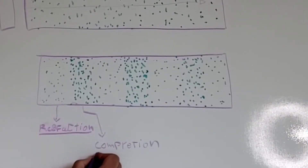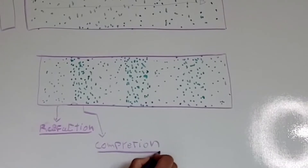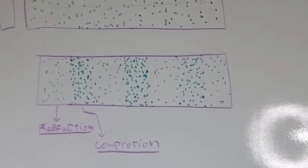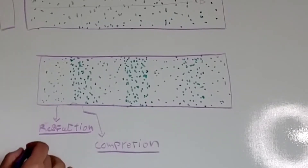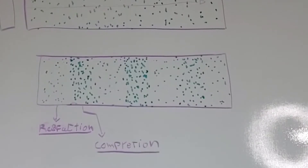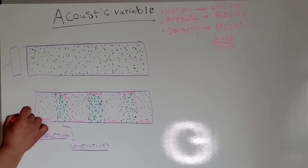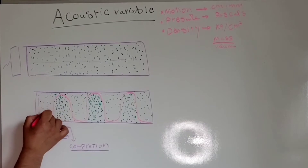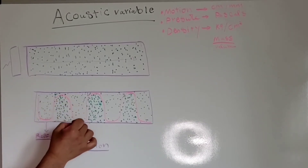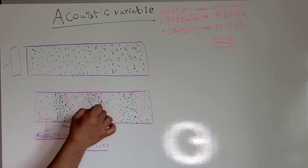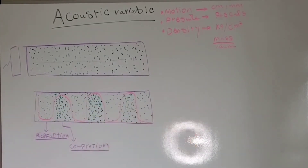An area with a high acoustic variable is called compression. Compression has more motion, more pressure, and more density. Rarefaction has less pressure, less motion, and less density. If we draw a wave, the areas alternate between rarefaction, compression, rarefaction, compression, and so on.